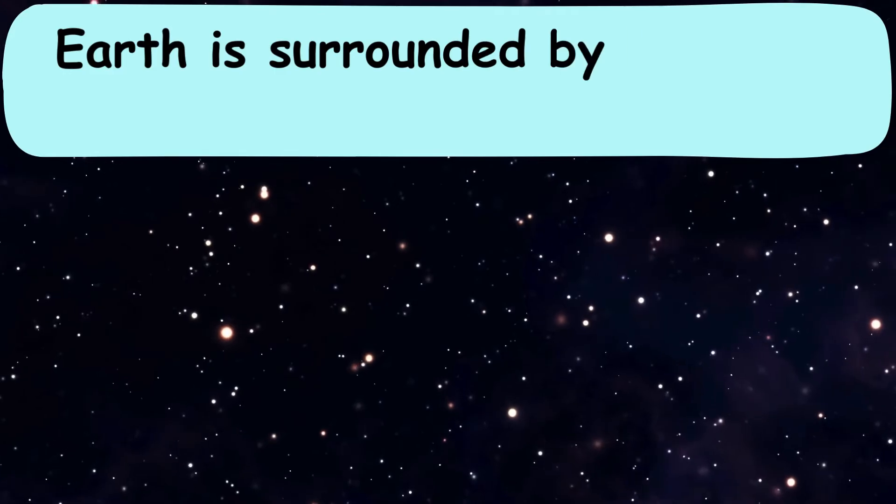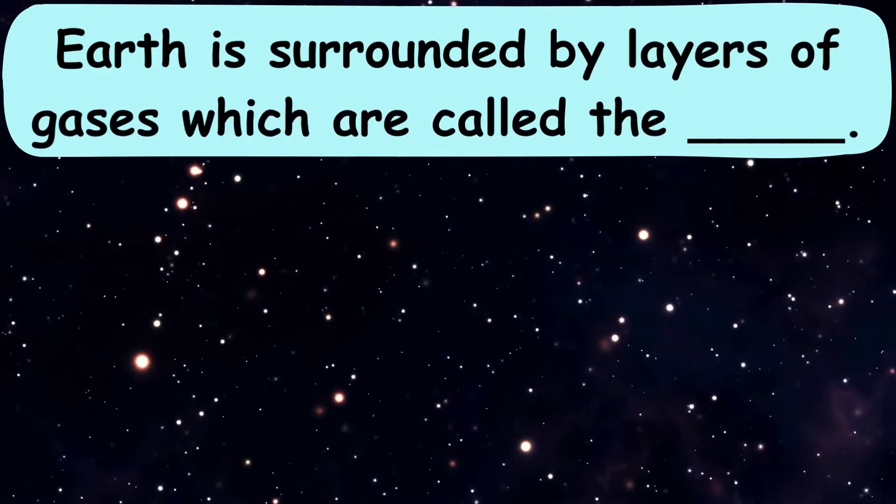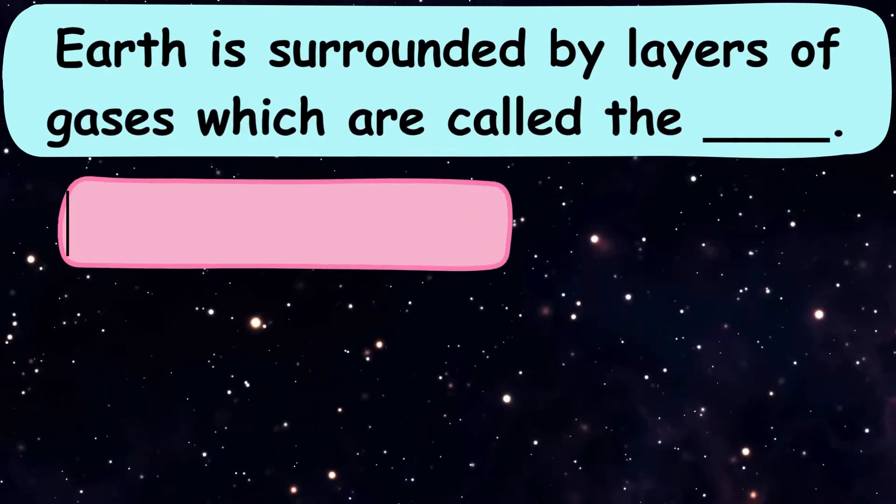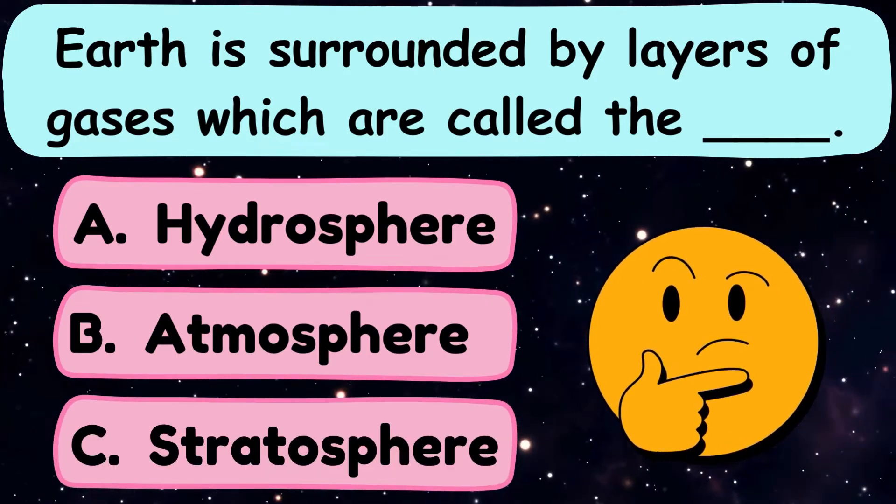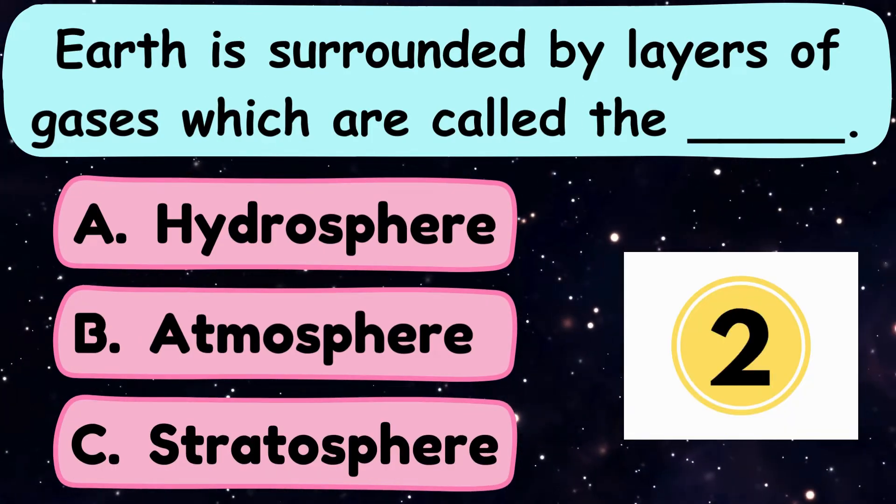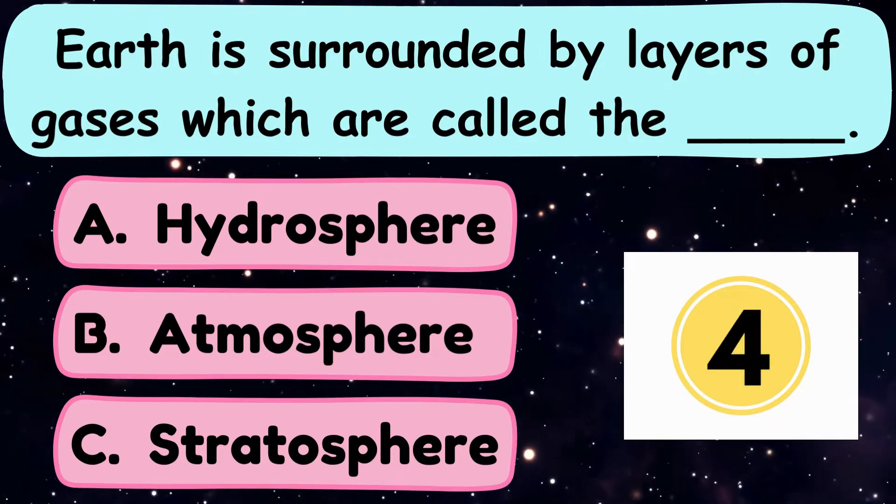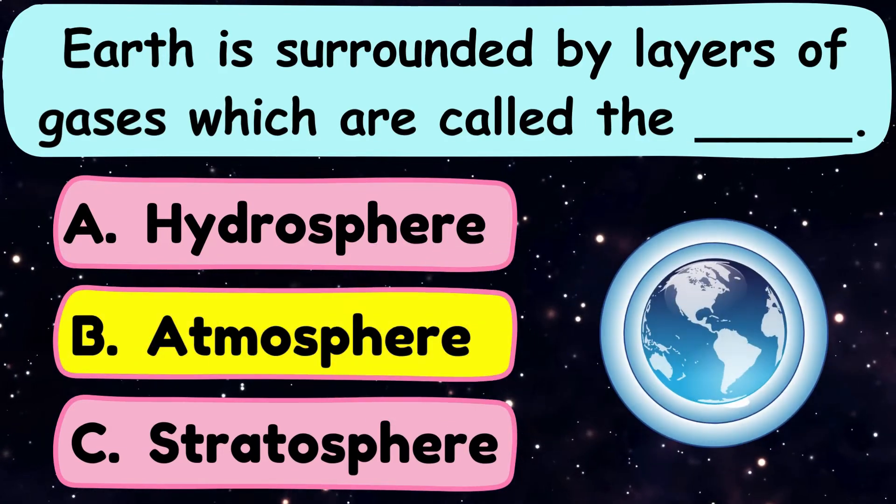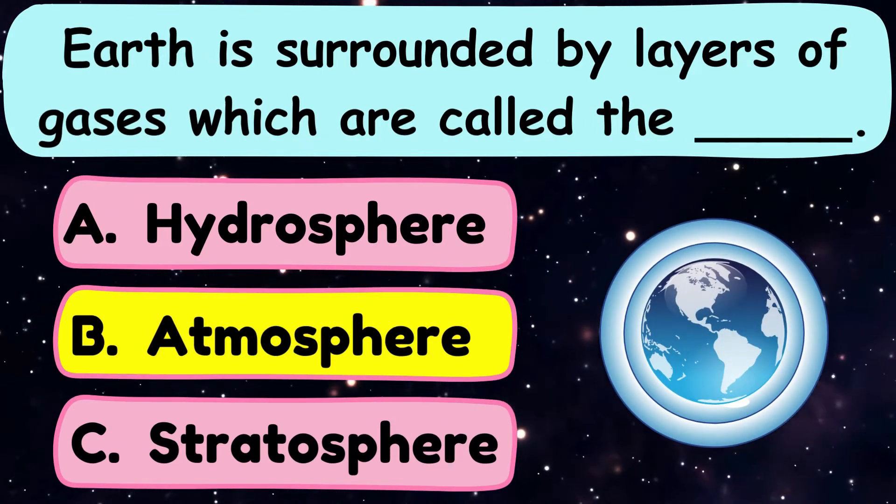Question number 10. Earth is surrounded by layers of gases which are called the dash. A. Hydrosphere, B. Atmosphere, or C. Stratosphere? The correct answer is option B. Atmosphere.